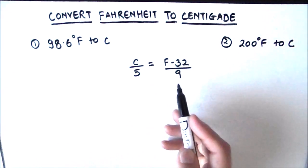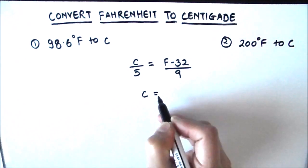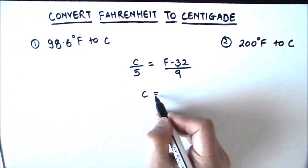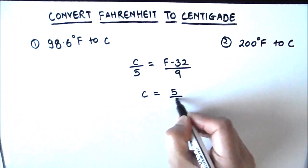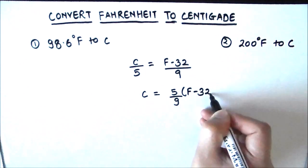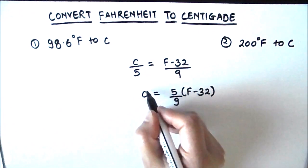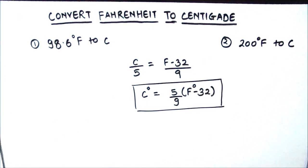This formula we can use to convert from Fahrenheit to centigrade or centigrade to Fahrenheit. As we are converting from Fahrenheit to centigrade, we can find out what is centigrade equal to from this formula. That's going to be 5 upon 9 times F minus 32, which is C, centigrade. This is the formula we are going to use.